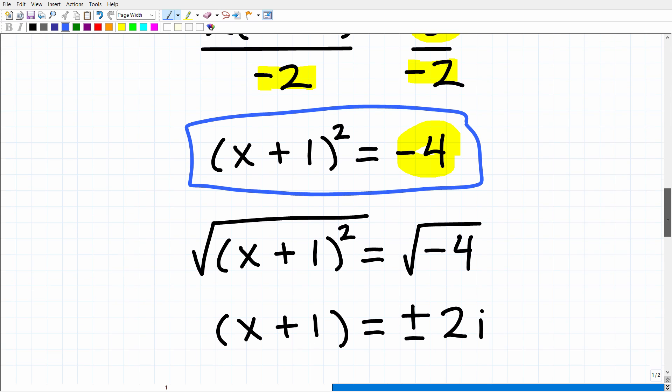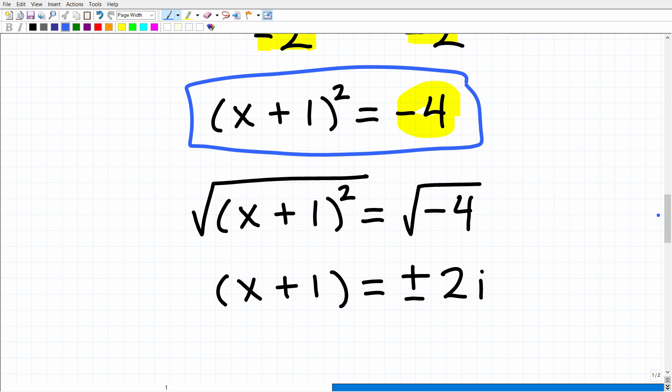And now we can go ahead and take the square root of both sides. When we take the square root of both sides, we have the square root of (x + 1) squared, which is x + 1. And the square root of negative 4, which is going to be positive and negative 2i.